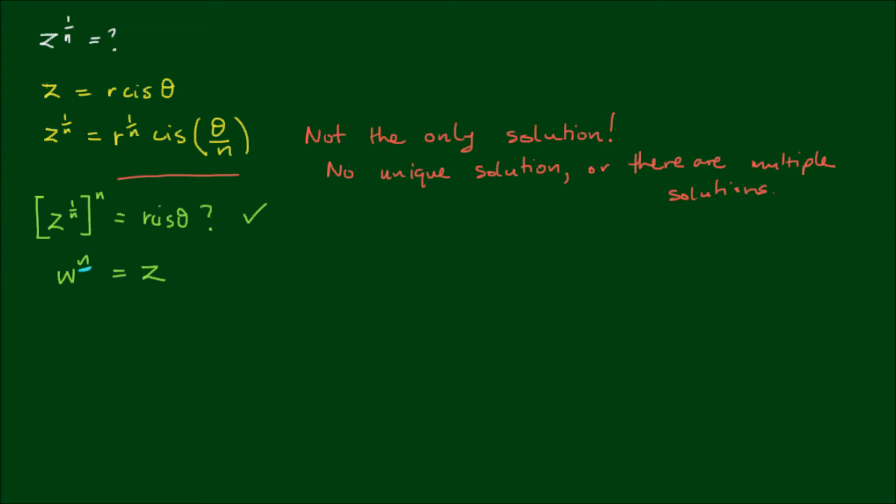How many solutions there are depends on the value of n. For instance, if we're finding the square root of a complex number, n equals 2, and there should be 2 roots. If we're finding the 5th root of a complex number, then n equals 5, and there should be 5 roots. So how do we find these roots?